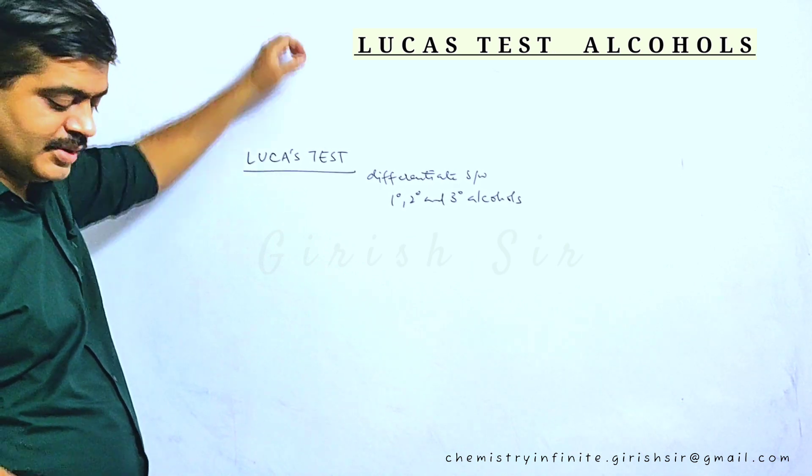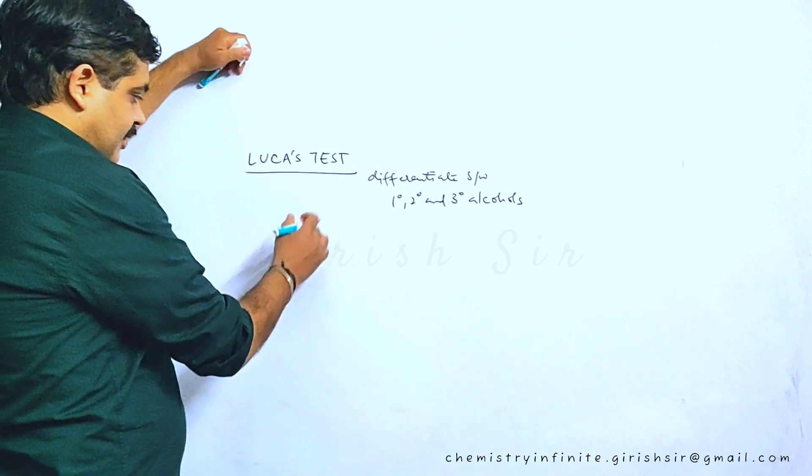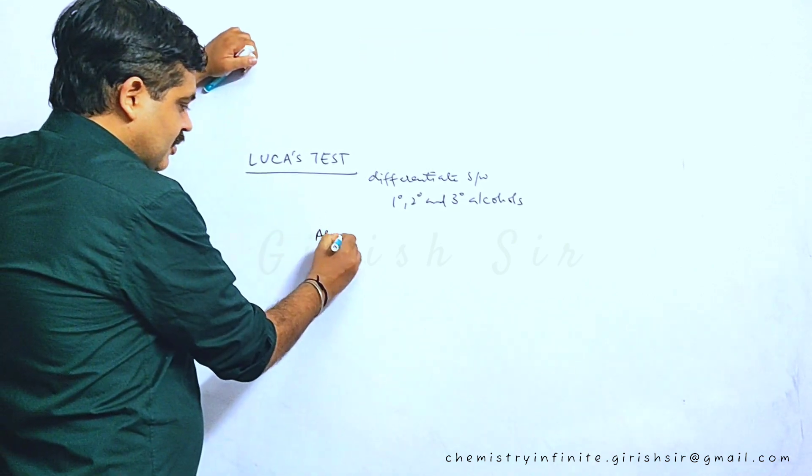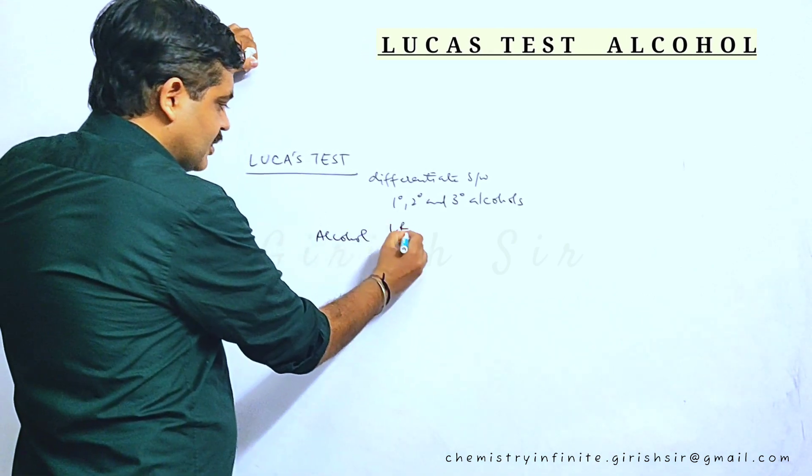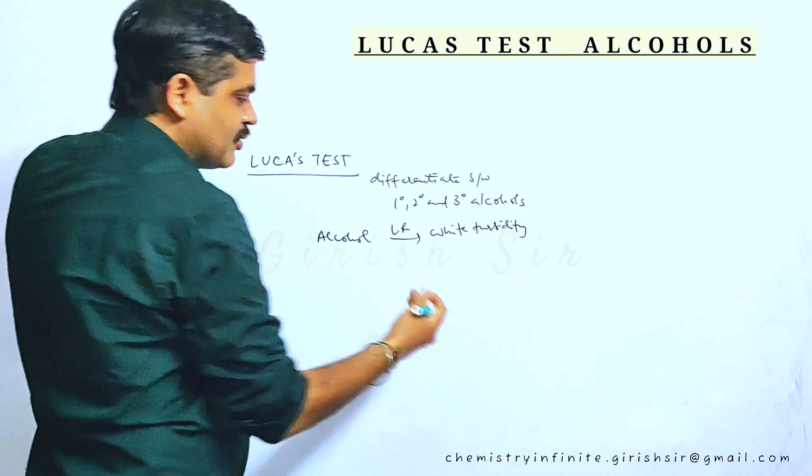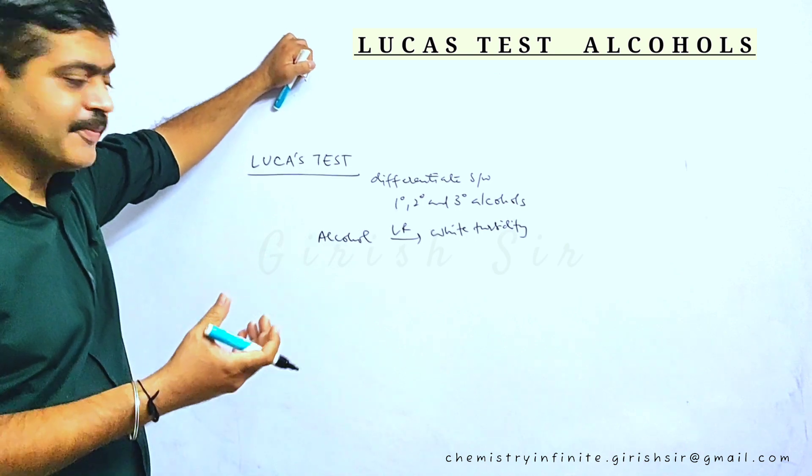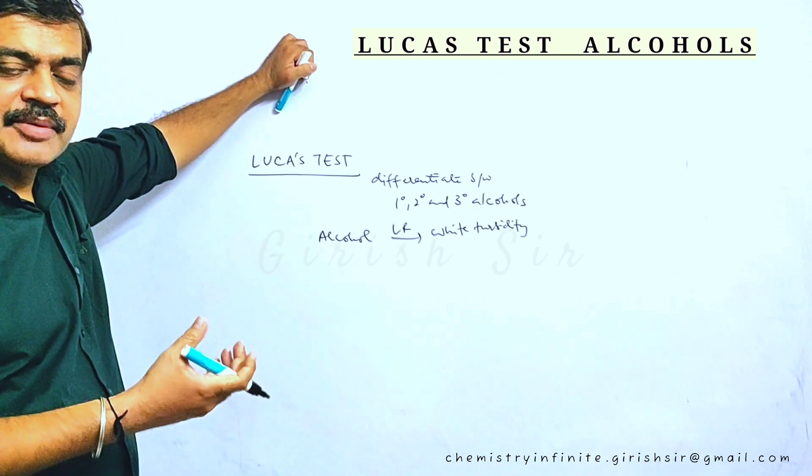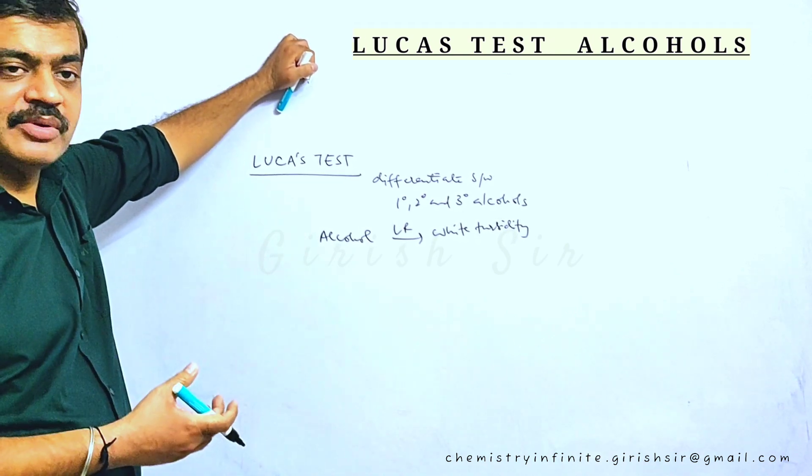Here what we do is we take an alcohol and treat with Lucas reagent, which generally produces white turbidity in the solution. Solution becomes cloudy. So how fast that happens will help us decide degree of the alcohol present.